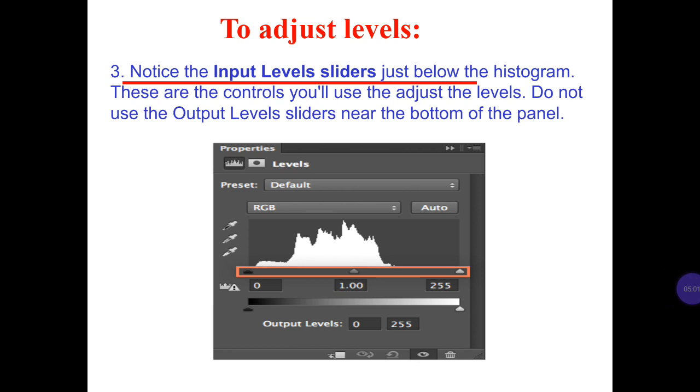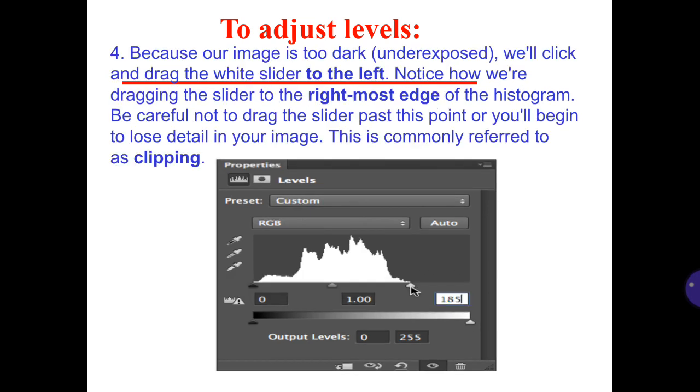3. Notice the input level sliders just below the histogram. These are the controls you'll use to adjust the levels. Don't use the output level sliders near the bottom of the panel. 4. Because our image is too dark or underexposed, we'll click and drag the white slider to the left. Notice how we're dragging the slider to the right-most edge of the histogram. Be careful not to drag the slider past these points or you'll begin to lose detail in your image. This is commonly referred to as clipping.